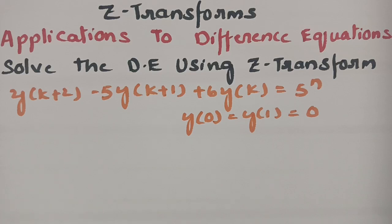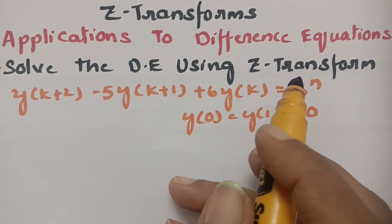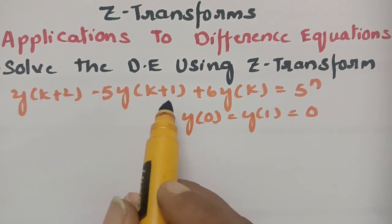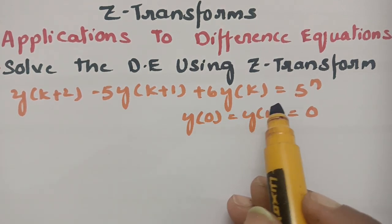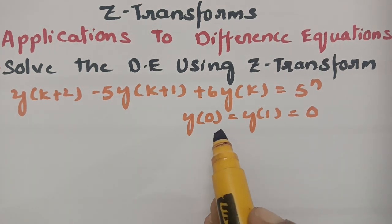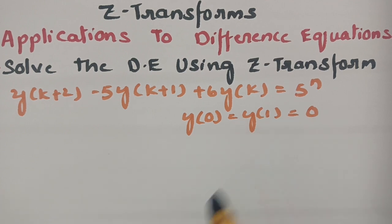Today's topic is applications to difference equations using Z-transforms. In this video I am going to solve the difference equation: y(k+2) - 5·y(k+1) + 6·y(k) = 5^n, where the initial conditions given are y(0) = 0 and y(1) = 0.